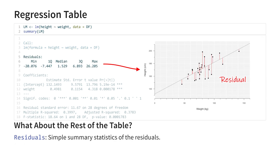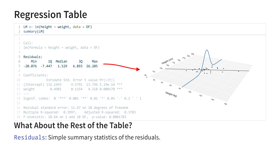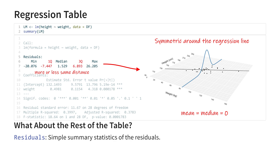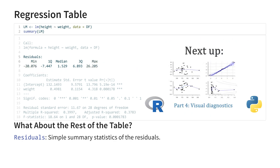The next part is a summary of the residuals. One of the assumptions for valid inference is that the error term in the model follows a normal distribution, which means it should be symmetrically distributed, in which case the mean is equal to the median. The mean of the residuals is by definition 0, so you could check if the median is also close to 0, or whether the first and last 25% of residuals are more or less equally far away, or whether the extremes are of the same order of magnitude. But even if all of those things are true, that doesn't necessarily mean the residuals are approximately normally distributed — just that the distribution is more or less symmetric. There are much better ways to check distributional assumptions, which we'll see in the next video. So this is another part of the table you can safely ignore.